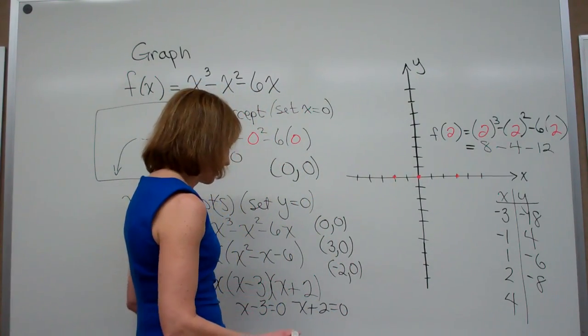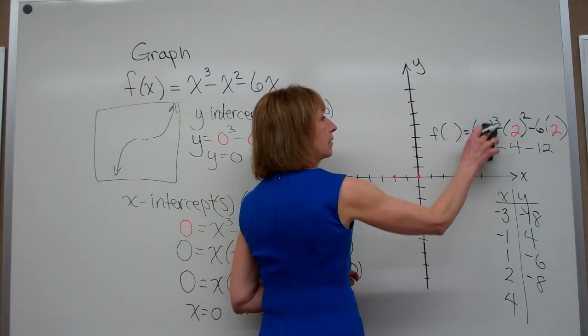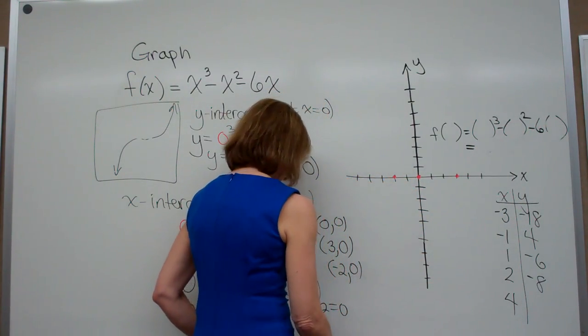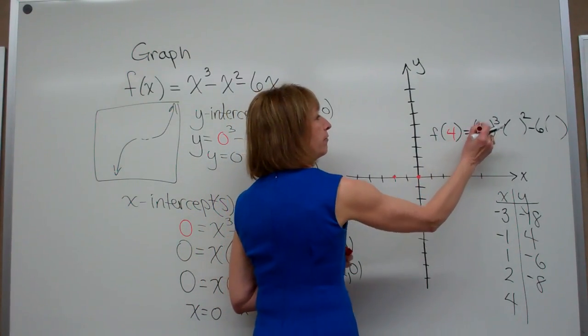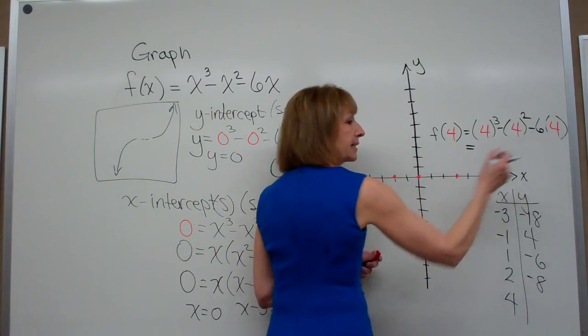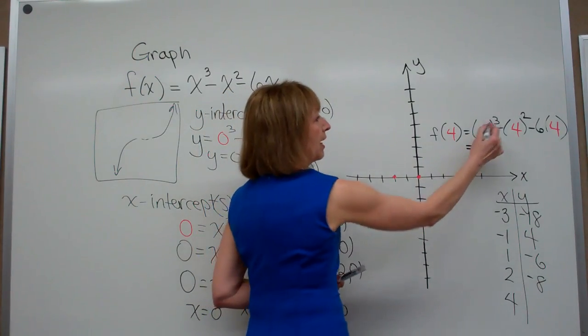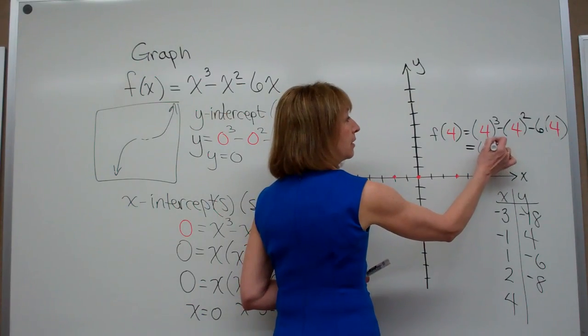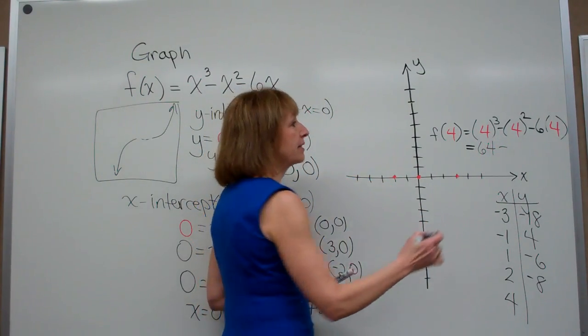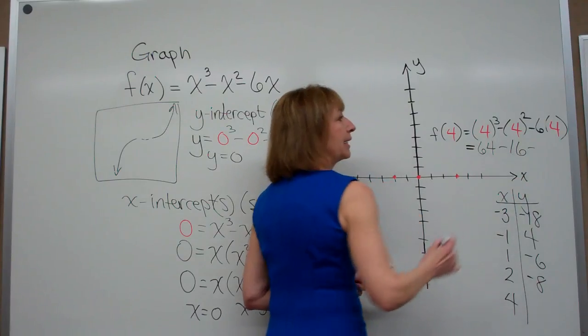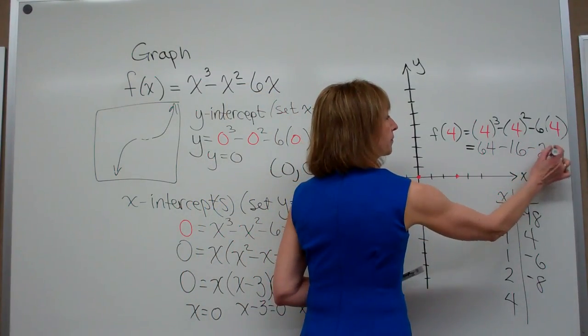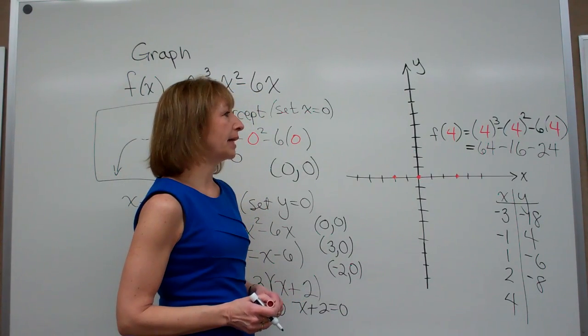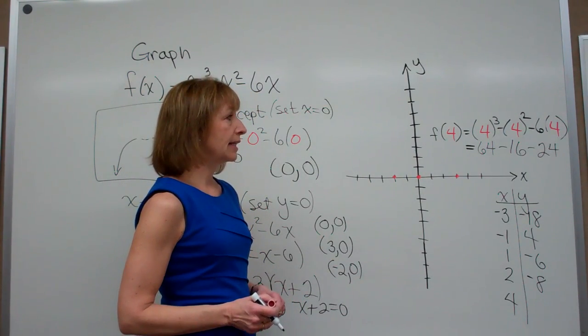And then lastly, when x is 4, we have f(4) = 4³ - 4² - 6(4). So I have 4³ is 4 × 4 = 16, times 4 is 64, minus 4² = 16, minus 6 × 4 = 24. So when I have 64 - 16 - 24, that gives me 24.